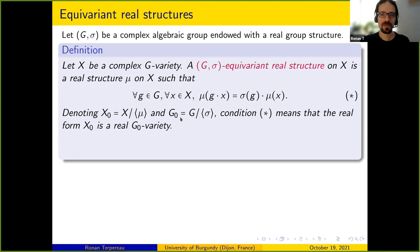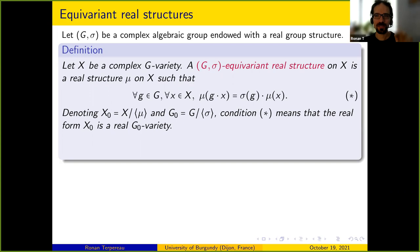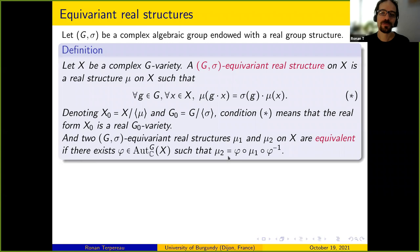Two equivariant real structures are equivalent if they are conjugated by a G-equivariant regular automorphism. In that case X/μ_1 is isomorphic to X/μ_2 as a G_0-variety if and only if μ_1 and μ_2 are conjugated. You can then ask the same questions as before: does there exist an equivariant real structure, how many up to equivalence, and is this number finite?